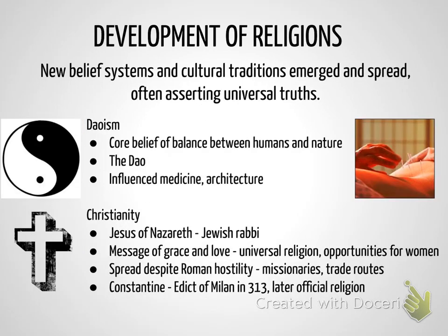Another religion developing in East Asia is Taoism. Its core belief is that there must be balance and harmony between humans and nature — a way to be in harmony with the Tao or the Wei. The symbol of yin and yang represents this balance. Taoism influenced medicine, including acupuncture as a practice to restore harmony and healing. It also influenced much of the architecture and temple buildings seen throughout China.